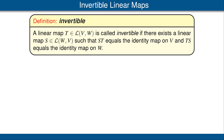Suppose T is a linear map from V to W. We say that T is invertible if there exists a linear map S in the other direction from W to V, such that ST equals the identity map on V and TS equals the identity map on W. In other words, we are considering invertibility under the operation of multiplication of linear maps, which is the same as composition of linear maps.